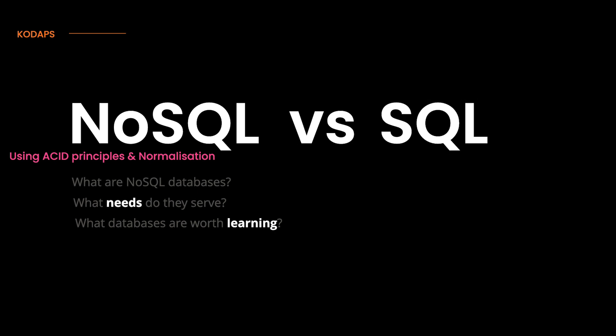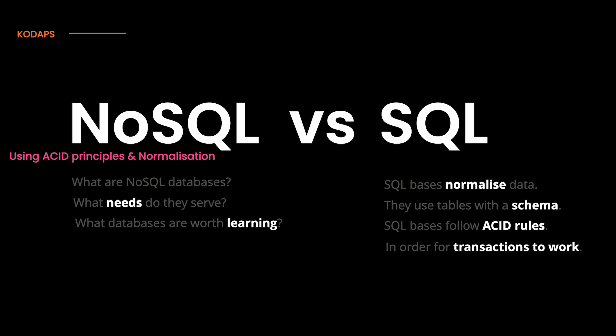SQL databases normalize data and structure it using tables. Tables have a schema, and every row is the same kind of data. Because SQL databases are targeted at the transaction use case, they are structured to follow the ACID rules. However, transactions are not the only possible use case — there are plenty of other use cases where a database is needed.